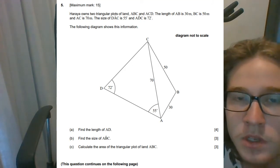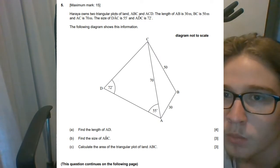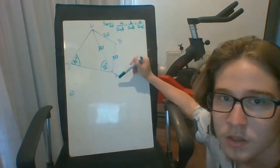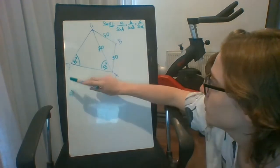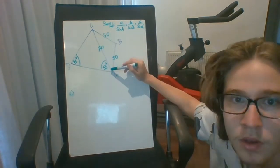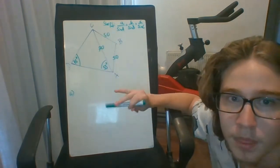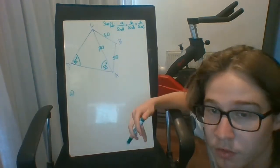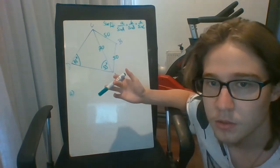We have ABC and ACD. They give us a ton of info: the length of AB is 30, DC is 50, CA is 70 meters. The size of angle D, AC is 55, of ADC is 72. Thankfully the diagram shows all the information that is given, so you want to double check that right away.